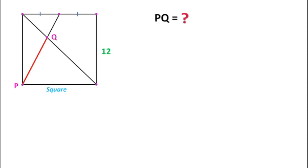Welcome to Definite Mind. In this question there is a square whose side length is 12 units, and this is the midpoint of this side length of the square. We have to find the length of line segment PQ, that is the red line segment. I suggest you pause this video and try to solve it yourself, otherwise watch the solution completely.